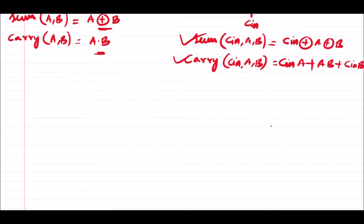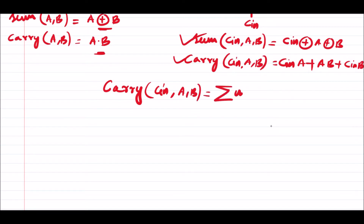We are going to develop a different equation for the carry. Let us first write down the minterm equation for the carry of the full adder. So carry C(Cin, A, B) equals the summation of minterms 3, 5, 6, and 7.